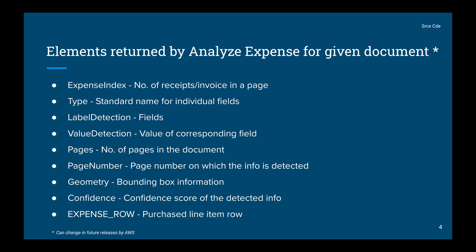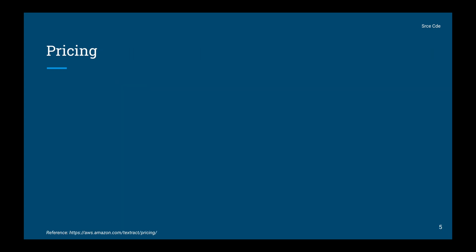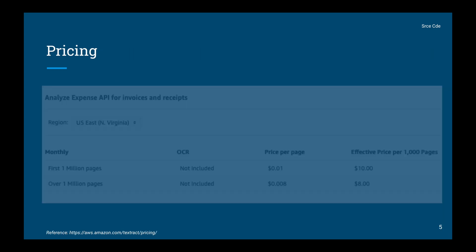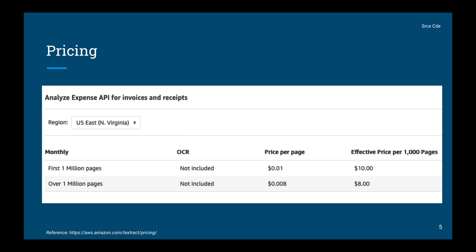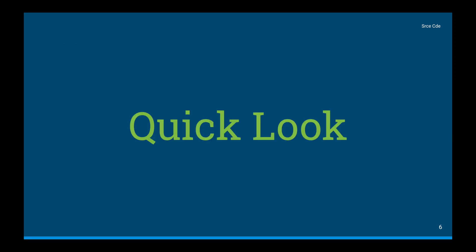The most important part is the pricing. It will cost you ten dollars per thousand pages for the first one million pages per month. If it goes beyond one million pages in a month, it is reduced to eight dollars per thousand pages. I think the pricing is reasonable.